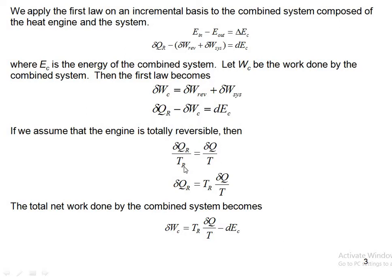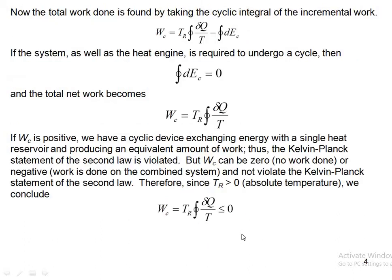If we assume the engine is totally reversible, we can write δQ_R / T_R = δQ / T, as discussed in the previous chapter. Therefore δQ_R = T_R · (δQ / T). Substituting and rearranging, δW_C = T_R · (δQ / T) − dE_C. To find the total work done, we take the cyclic integral: the cyclic integral of δW_C equals W_C = T_R times the cyclic integral of (δQ / T) minus the cyclic integral of dE_C.